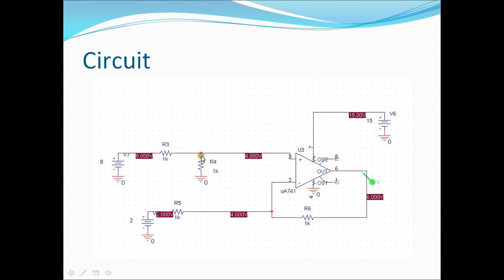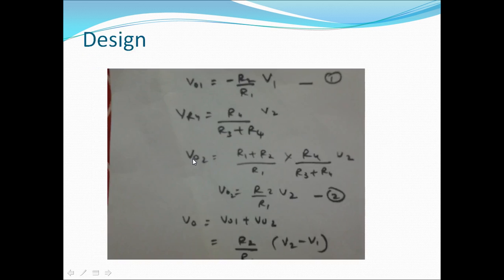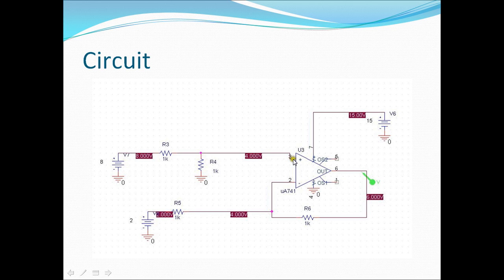So V2 is the voltage appearing across R4 resistor. So this is VR4. Now we are going to get V2 into R4 upon R3 plus R4.